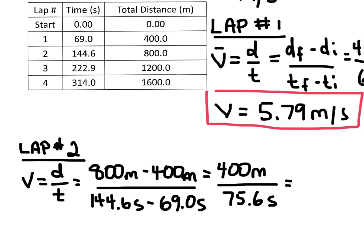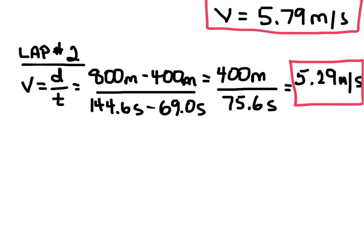And when we do the calculation here, we get 5.29 meters per second. And so that is her time for her second lap there. And let's move on to her third lap.